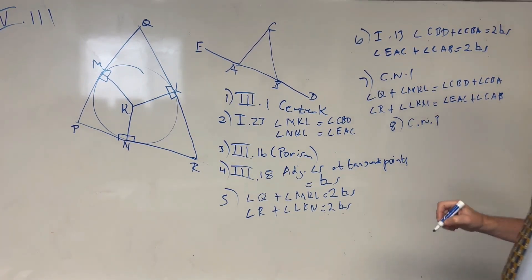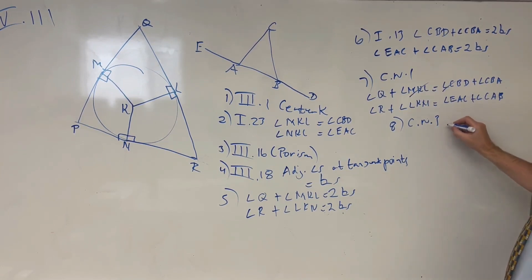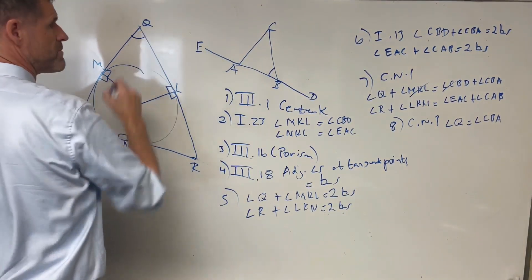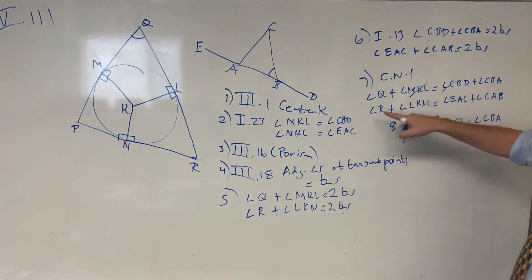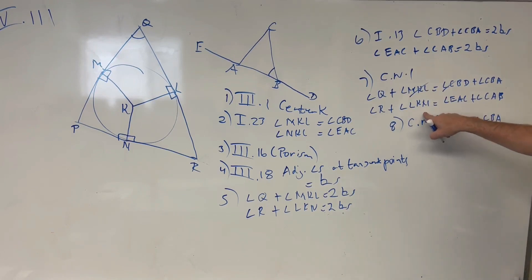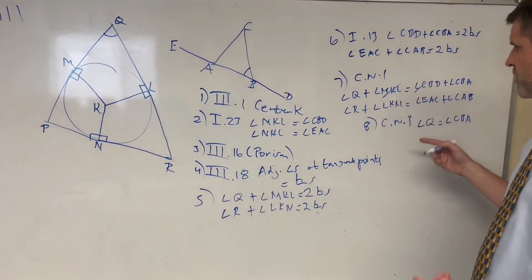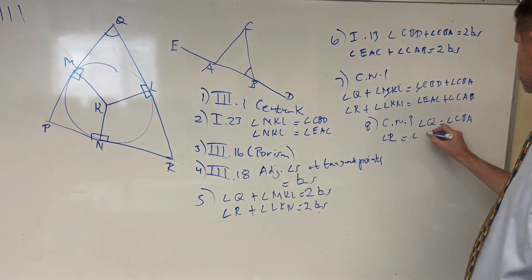And then utilizing common notion number three, we can subtract equals from equals. Back at our first or second step, we know that the angle MKL is equal to the angle CBD, so we can subtract it from both sides of the equation. And we'll be left with angle Q equaling the angle CBA. So CBA equals angle Q. And then utilizing common notion number three again in this step, we know from step two that LKN or NKL, same angle, is equal to EAC, so we can subtract it from both sides of the equation, and we get angle R equals the angle CAB.